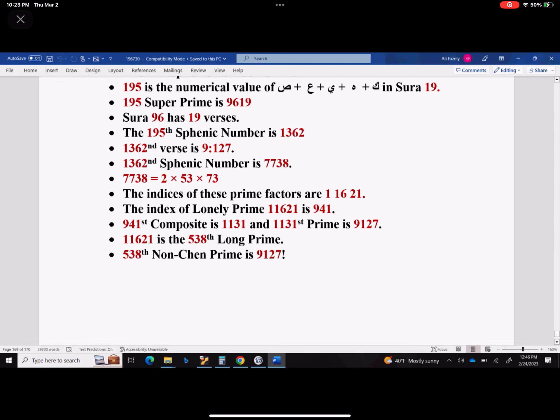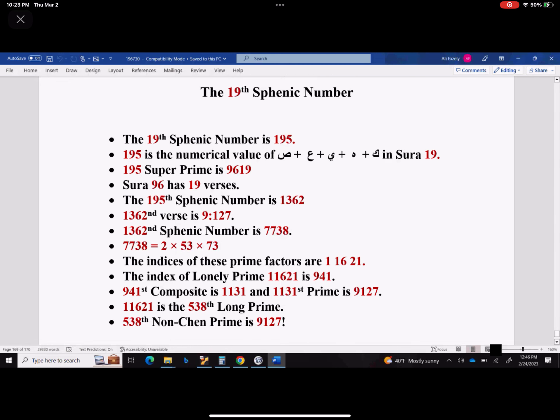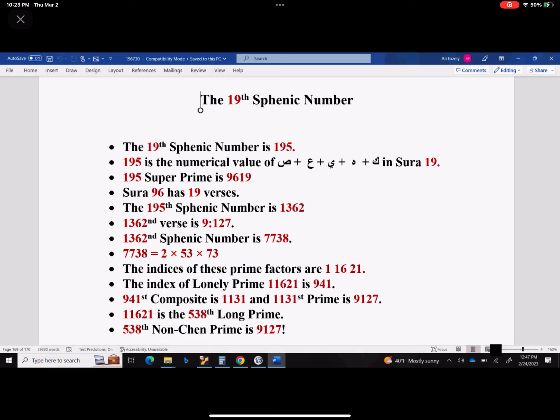So all of this comes because of this 195, which is the numerical value of these five Arabic letters, the longest set of initials we've got. Five initials, five letters in the initials, and those are telling us how this whole thing is meshed together in order to tell us the truth. If I want to talk about this, this takes the entire day. I'm just giving you the salient features of these numbers.